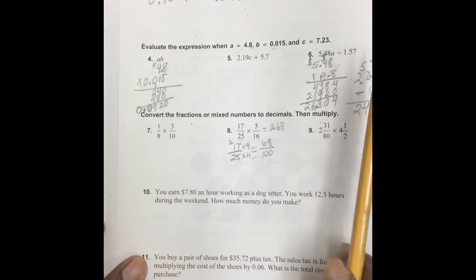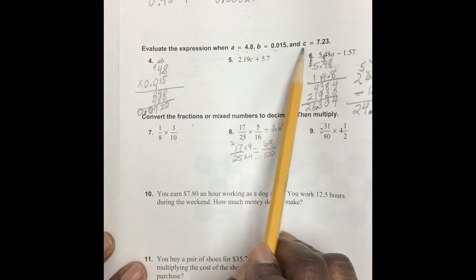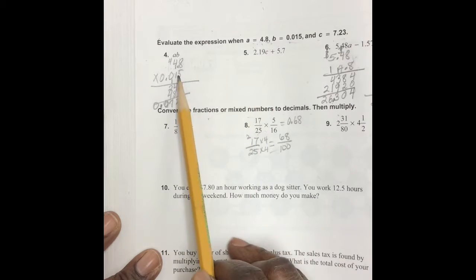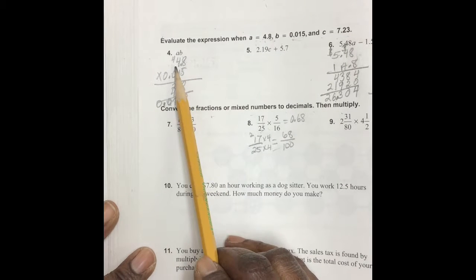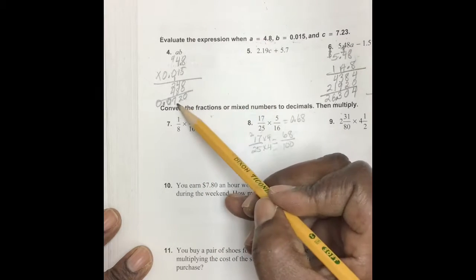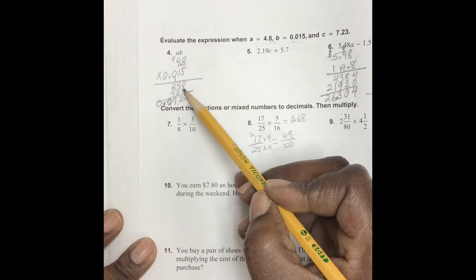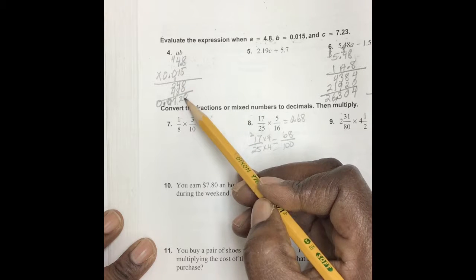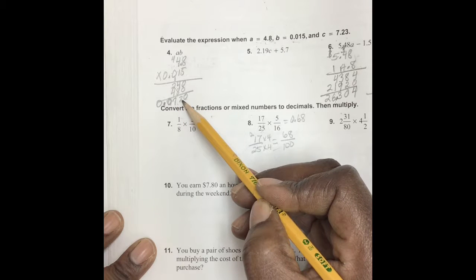Okay, on number four we have the value of a, the value of b, the value of c, so that a times b—a is 4.8, b is 15,000—so we multiply 4.8 times 15,000, and we discovered that five times 48 is 240, and we move over one place. One times 48 is 48, we add and we have a value of 720.